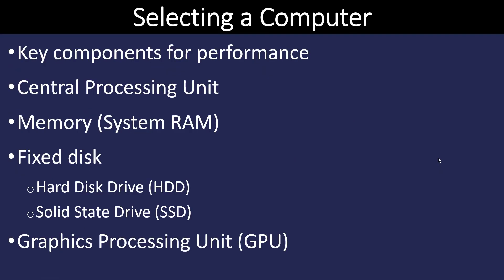We're going to look at the core components of a computer from the perspective that we are selecting or trying to determine what computer we need to meet our needs. So we want to make sure our key components have the performance necessary to carry out whatever task we have in front of them. So we'll start by looking at the CPU, often called the central processing unit. It is the device that runs or makes the computer work.